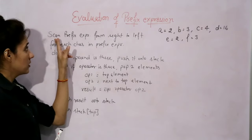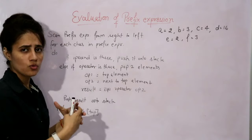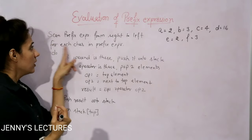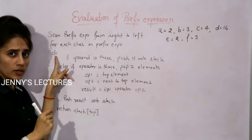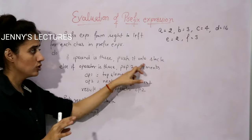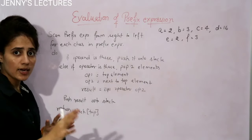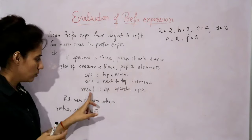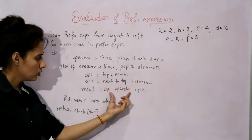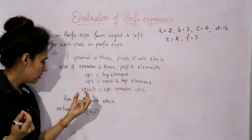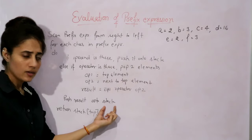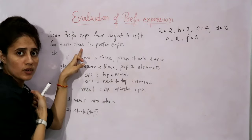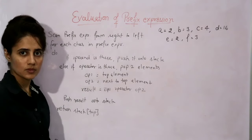The algorithm for prefix evaluation using stack: step one — scan the prefix expression from right to left. You can write a for loop: for i equal to length minus 1 down to 0. For each character in the prefix expression: if it is an operand, push it onto the stack. If it is an operator, pop two elements — operand 1 is the top element, operand 2 is next to top. Evaluate: operand 1 operator operand 2, store the result, and push it onto the stack. Once i becomes 0, return the stack top.